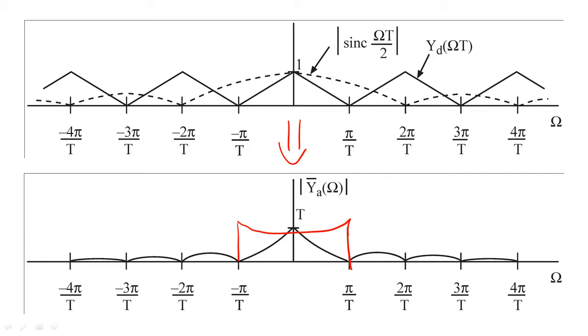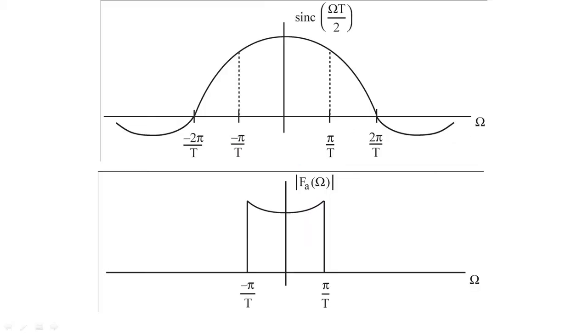So based on the shape of the sinc function, we can qualitatively see that f sub a of omega needs to be a low-pass filter with cutoff frequency π/T, and that also slightly emphasizes the higher frequencies to undo the scaling caused by the sinc function.